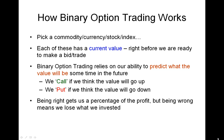Let's begin, as we always do, by detailing what binary option trading essentially is. Basically, we pick a commodity, currency, stock, or index — each of which has a current value at any given point in time right before we're ready to make our trade. Binary option trading relies on our ability to predict what the value of that asset is going to be sometime in the future. We call if we think the value is going to go up, and we put if we think the value is going to go down.